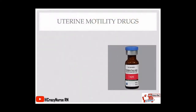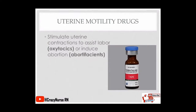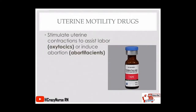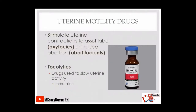Uterine motility drugs stimulate uterine contractions to assist labor — we call those oxytocics — or to induce abortion, which we call abortifacients. We also have tocolytics, which are drugs used to slow uterine activity. An example of a tocolytic is terbutaline.